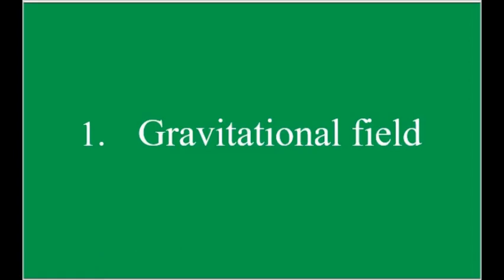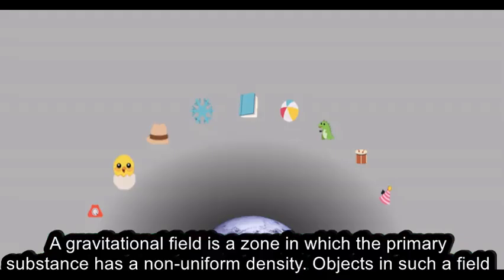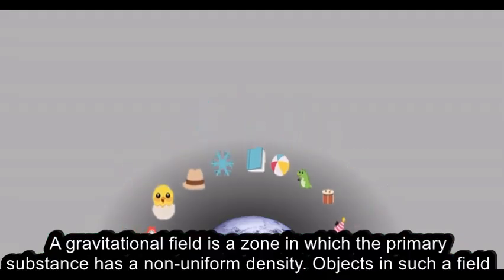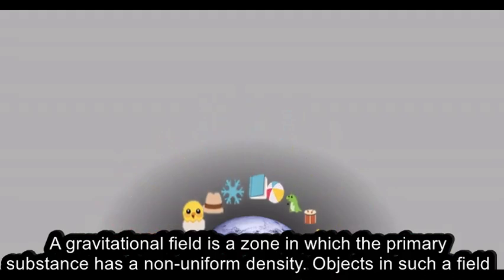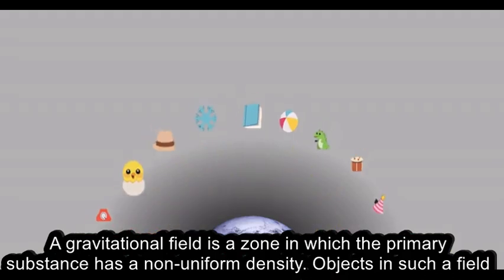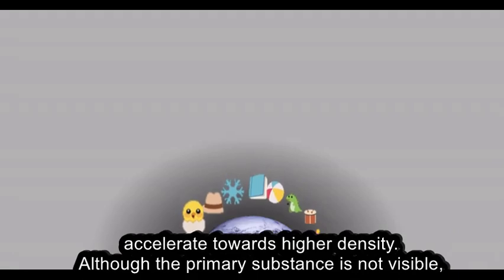1. Gravitational Field. A gravitational field is a zone in which the primary substance has a non-uniform density. Objects in such a field accelerate towards higher density.